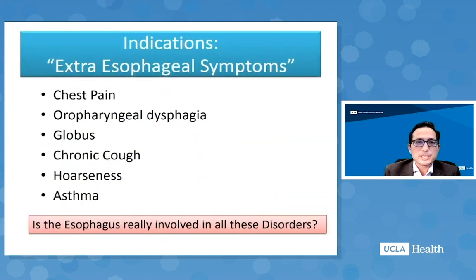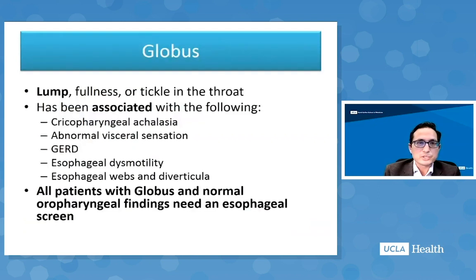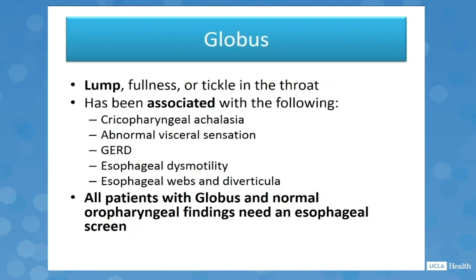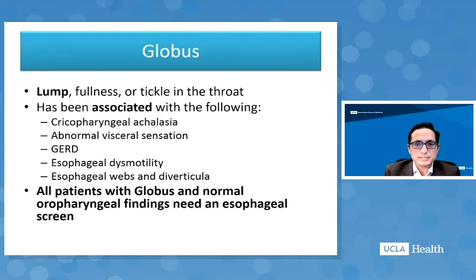Another consideration is patients with extraesophageal symptoms — chest pain, oropharyngeal dysphagia, globus sensation, chronic cough, hoarseness, asthma — where we might consider looking at the esophagus. Globus, a lump or fullness or tickle in the throat, has been associated with cricopharyngeal achalasia, abnormal visceral sensation, gastroesophageal reflux disease, esophageal dysmotility, and even esophageal webs and diverticula. One could make the argument that all patients with globus and normal oropharyngeal findings need an esophageal screen.